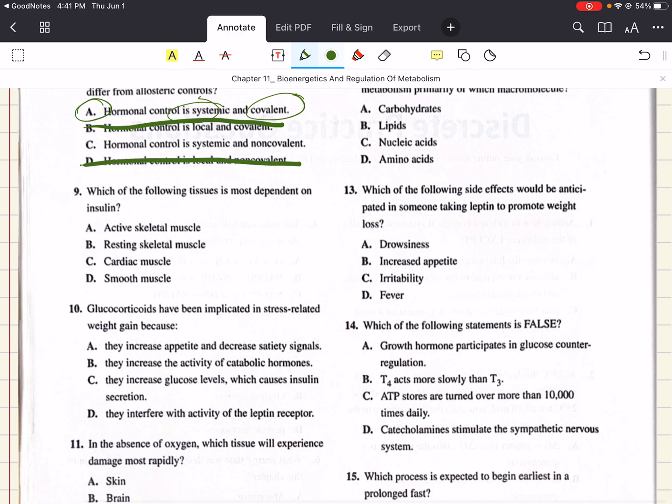Nine says, which of the following tissue is most dependent on insulin? The answer here is going to be B, resting skeletal muscle. Adipose tissue and resting skeletal muscle require insulin for glucose uptake. Active skeletal muscle uses creatine phosphate and glycogen to maintain its energy requirements. So the answer here for nine is B.